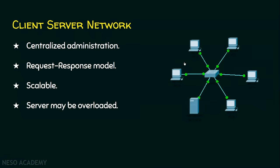Coming to the client-server network, here we have centralized administration, and the server performs that centralized administration. All the data is held by the server — these are all called clients and this is the server. That is why we call this schema a client-server network. It is also called a request-response model: if a client wants some data from the server, it first gives a request, and after accepting the request, the server gives a response. This is a scalable network — even if 100 devices want to participate, it can be achieved. But the problem is we are too dependent on the server, and when everyone starts using it, there are chances for the server to get overloaded.